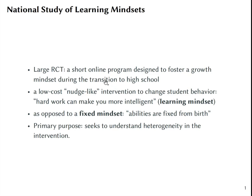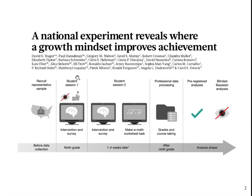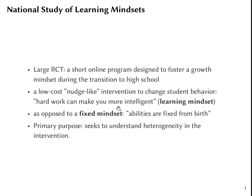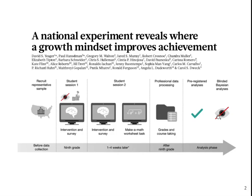This data comes from a large RCT experiment which consists of a short online program designed to foster a growth mindset during the transition to high school. This RCT was done in the US and included low-cost nudge-like interventions for students in their ninth grade, where some students would see messages like 'hard work can make you more intelligent,' which is assumed to put the student into a learning mindset, as opposed to a fixed mindset where a person may think that abilities are fixed from birth. The primary purpose of this experiment was to find whether this can change and improve the attitudes of students and their professional performance after they graduate.